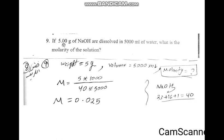Number 9 is the last: 5 grams of NaOH base are dissolved in 5000 ml of water. What is the molarity? We will use the same formula as in number 8: molarity equals weight multiplied by 1000 divided by molecular weight of NaOH multiplied by volume. Calculating directly, the molarity equals 0.025 mol. We calculate directly — weight multiplied by 1000 divided by molecular weight multiplied by volume — and the molarity is this value.